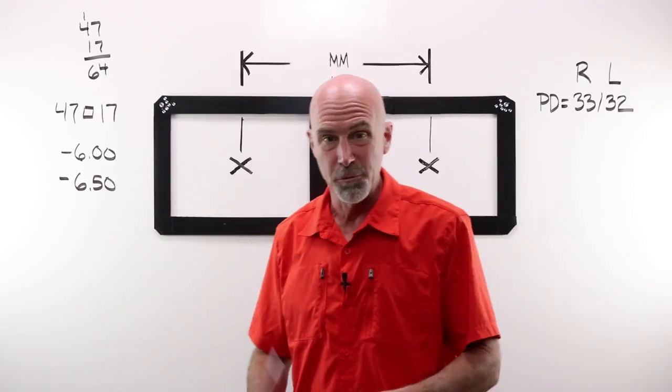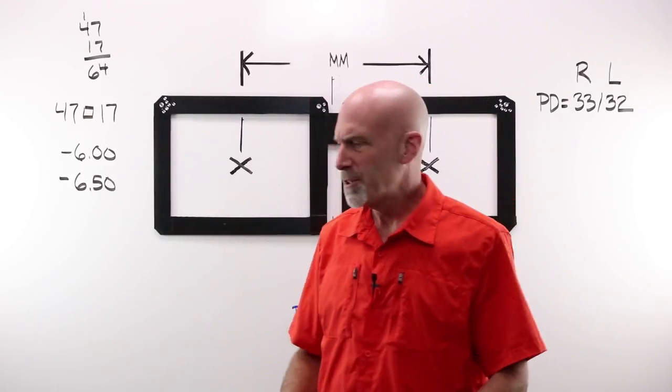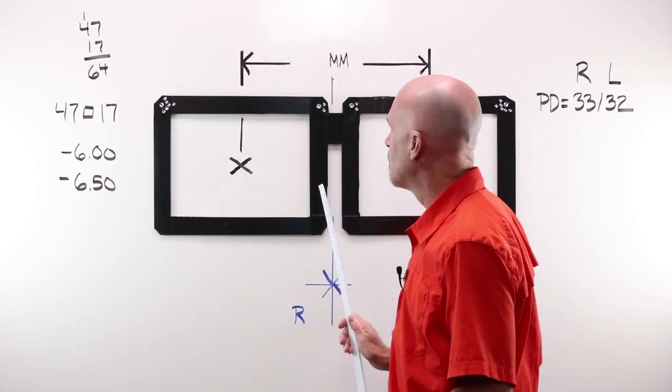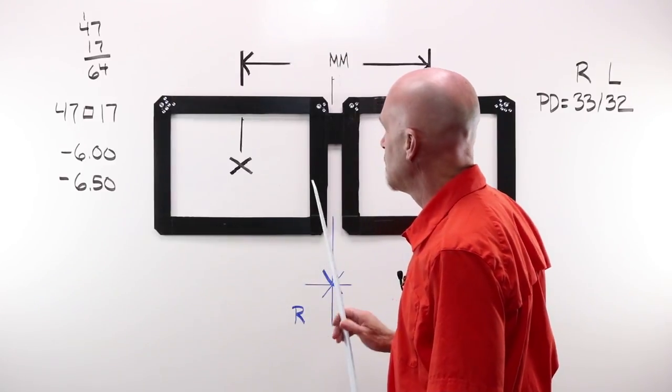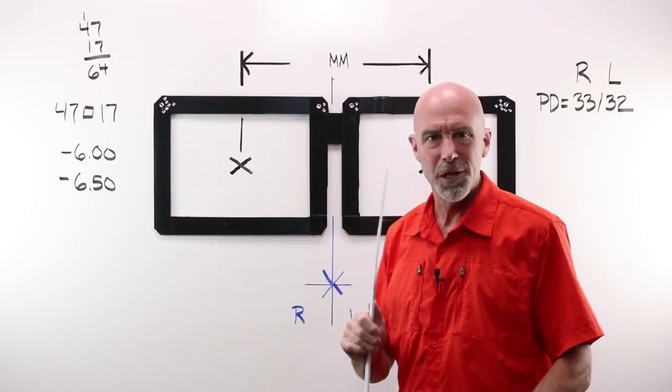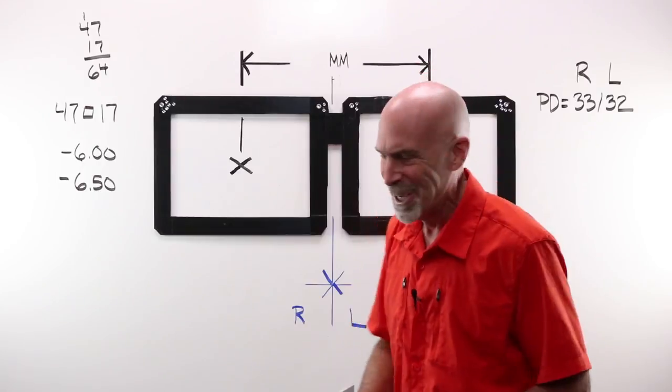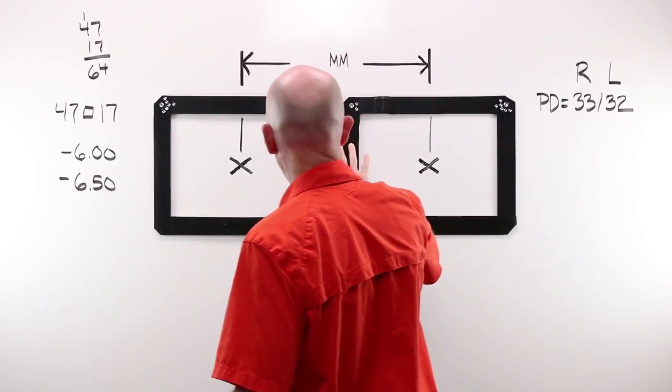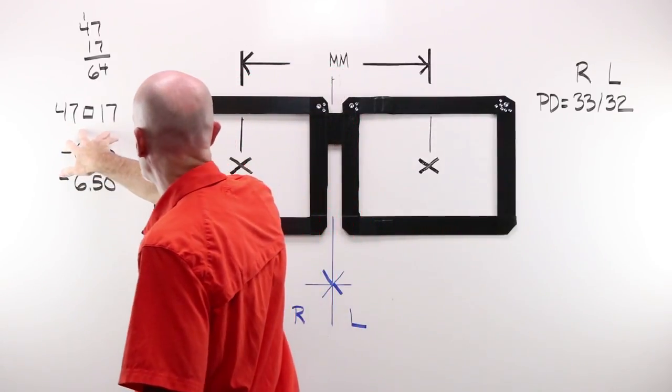Example number three, which I promised was going to be a little bit different, and it's going to be a little different too, because I'm actually going to kind of draw this out and work it out in front of the camera. So we may have a little fast motion here. I'm not sure. It may just be watching me, watching my back. So let's get going. For example three. We'll have a right of minus 6, a left of minus 6.50, a customer PD of 33-32, and a frame with a boxing system of 47-17.